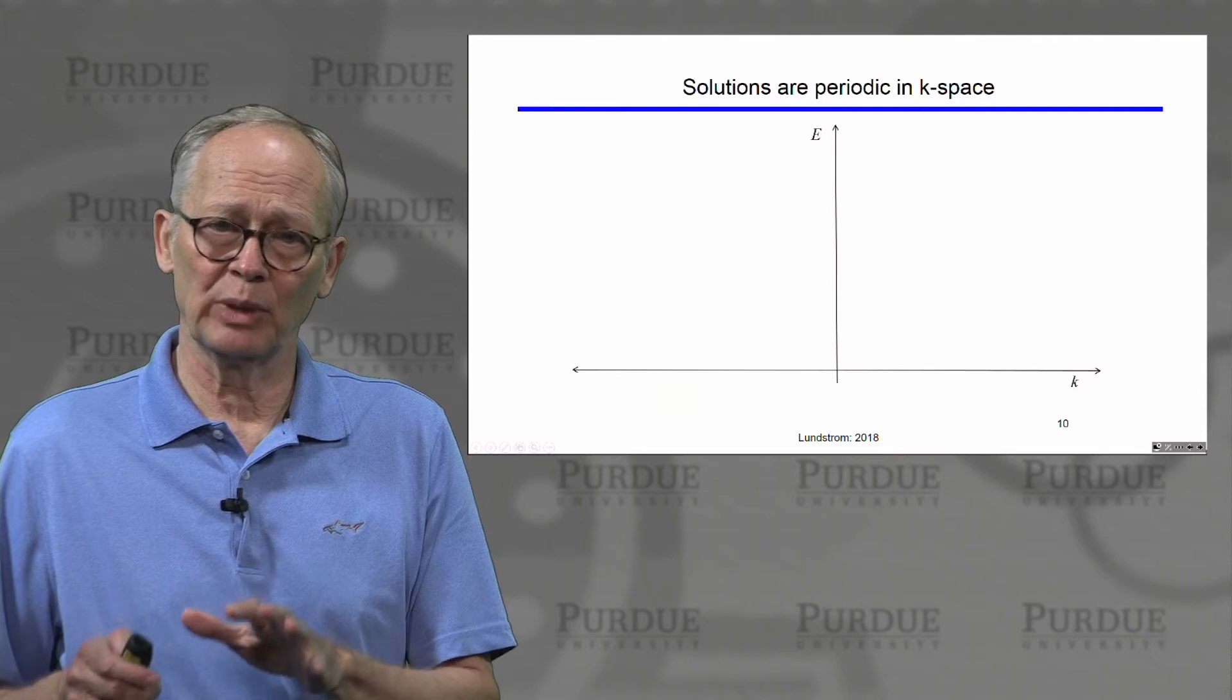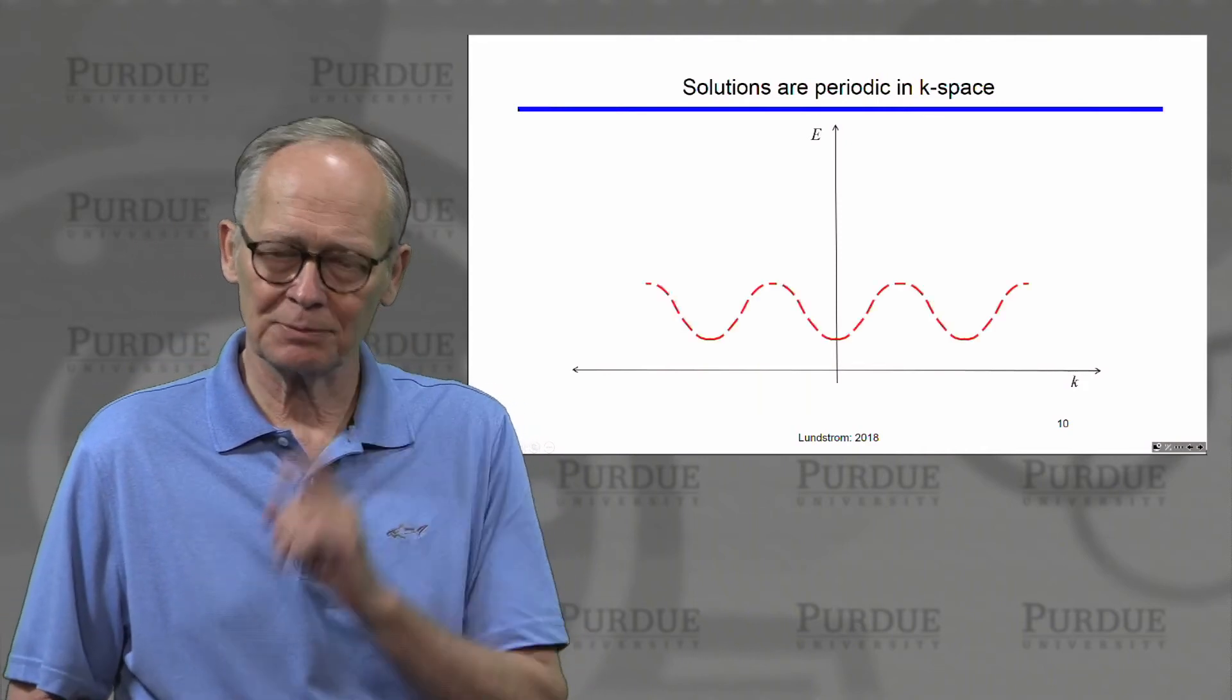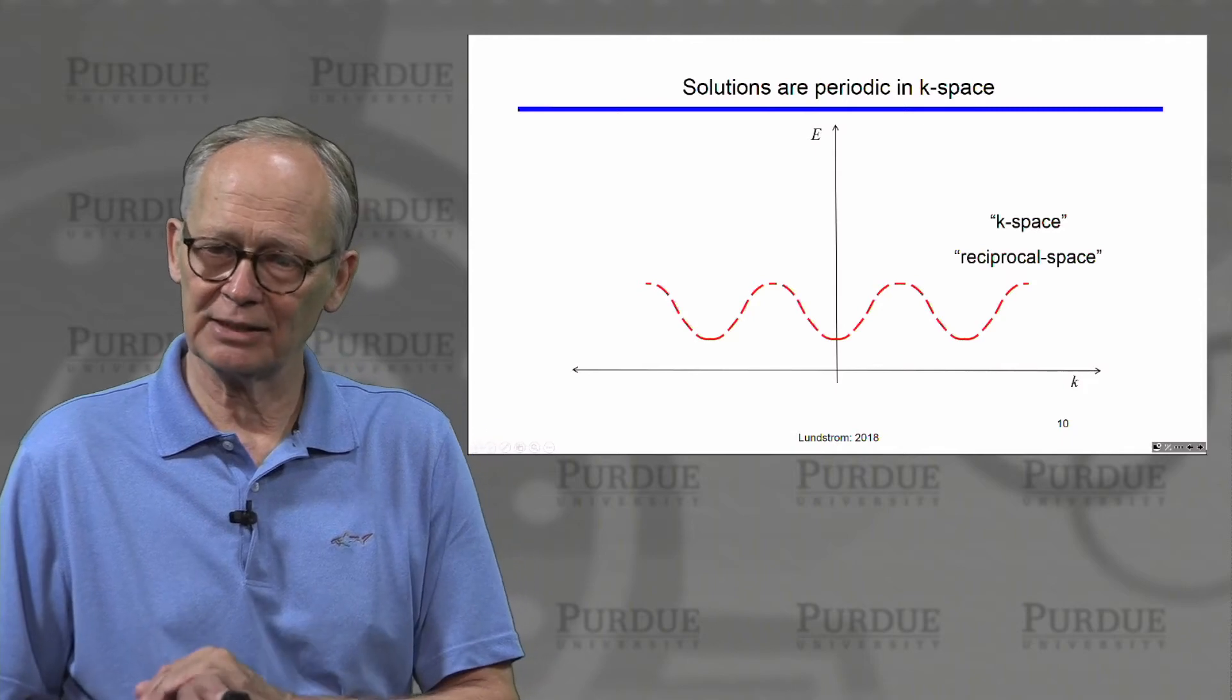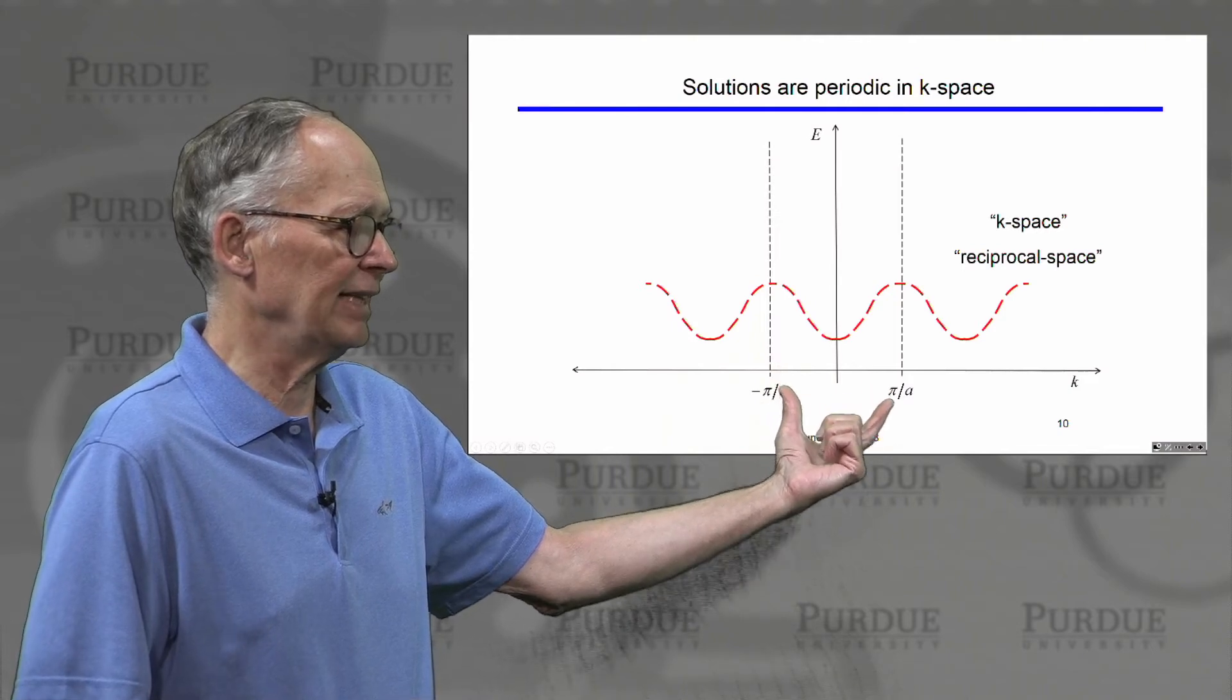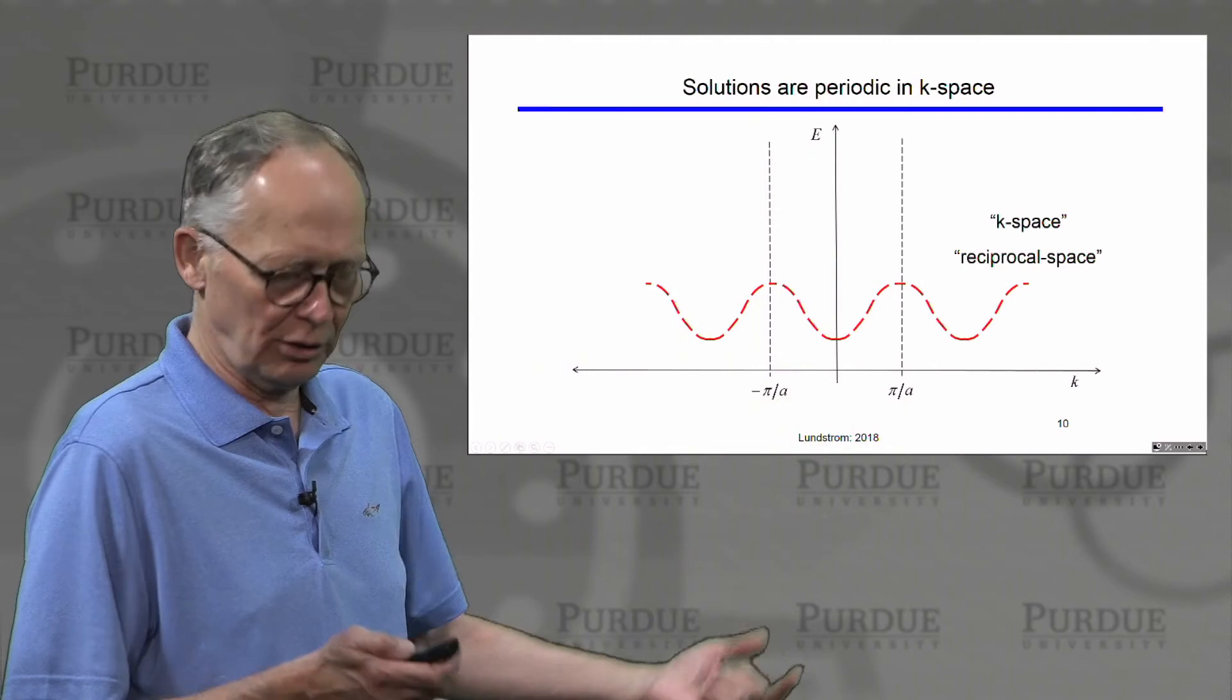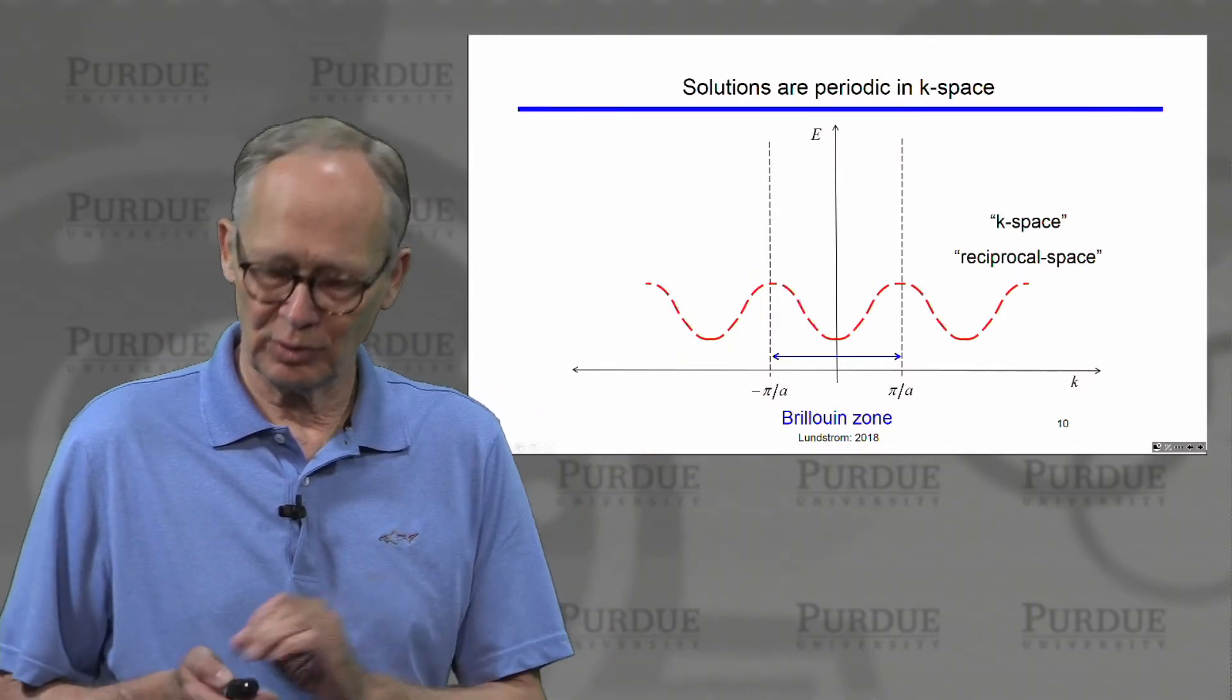Now when we turn to electron waves and crystals, we had a periodic potential, the crystal potential due to the atoms in the solid. Then when we solved the wave equations, we found that the solutions were periodic. Energy versus k was a periodic function in k-space, which is also called reciprocal space. These solutions repeat themselves over a region of k-space that is 2 pi over A in one dimension wide. We usually center that around k equals zero and we call this region the Brillouin zone. It goes from k is equal to plus pi over A to k is equal to minus pi over A, where A is our lattice spacing.